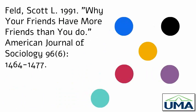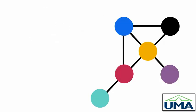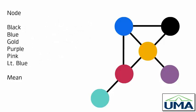Let's take a few seconds to review. Imagine you have six nodes. These six nodes are connected in various ways, and we can count very simply the number of friends that each node has. Black has two friends, blue has three friends, gold has four friends, purple has one friend, pink has three friends, and light blue has one friend.